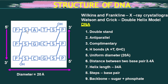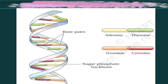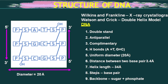The strands are held together by hydrogen bonds. Guanine and cytosine form triple hydrogen bonds, while adenine and thymine form double hydrogen bonds. The uniform diameter of DNA is 20 angstroms. The distance between two base pairs is 3.4 angstroms, and one complete turn of the helix is 34 angstroms. The backbone consists of the nitrogenous bases, sugar, and phosphate molecules.